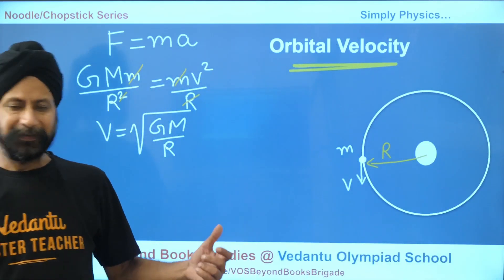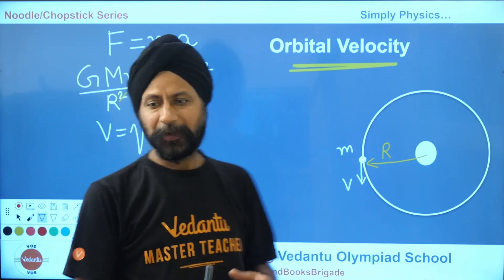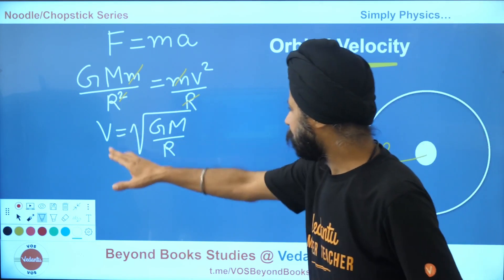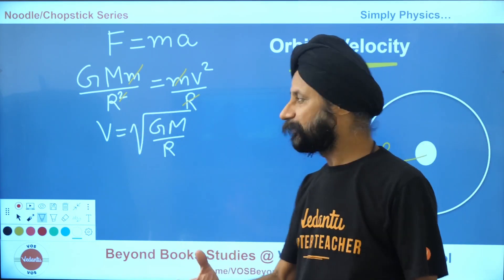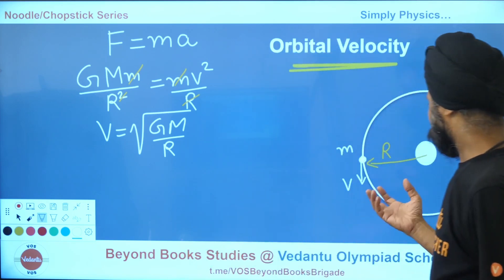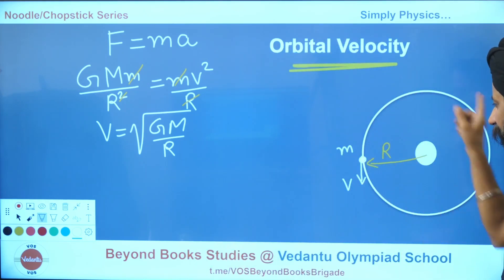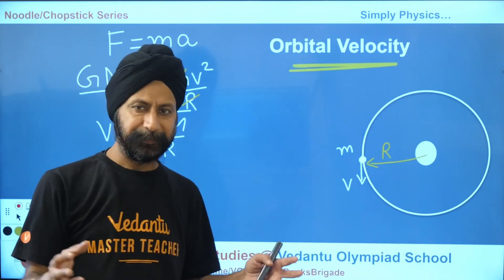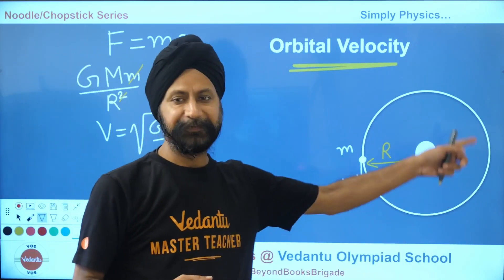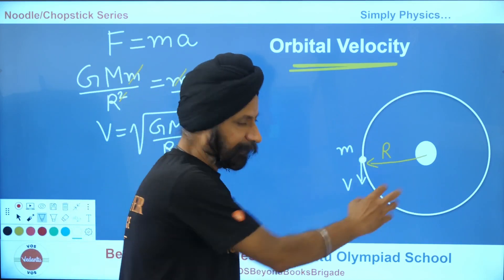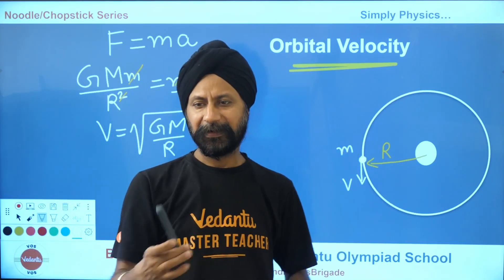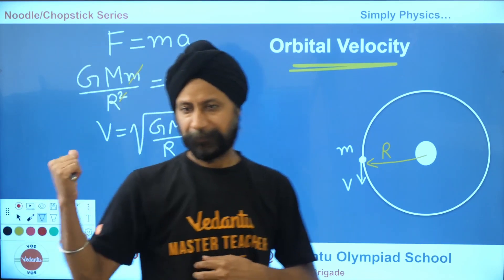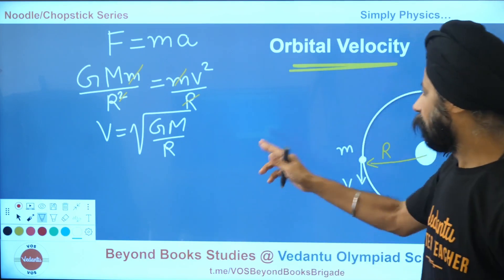One very interesting result: orbital velocity is independent of the mass of the satellite. Nowhere in the expression V = √(GM/R) does the satellite's mass appear — it cancelled out. So given the radius of the orbit, every satellite — whether heavy or light, big or small — will have the same velocity. In fact, if you're in a satellite and you release a pen outside, that pen becomes a satellite with the same orbital velocity.